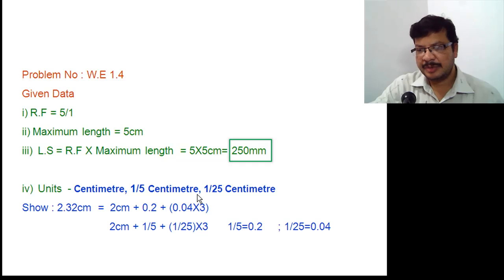With this length, 250 mm, draw a line and that line has to be divided into some number of equal parts. That number can be decided based on the maximum length and the bigger unit among the 3 units. Among these 3 units, the bigger one is cm, and maximum length is 5 cm. So if you divide this 250 mm long line into 5 equal parts and each part is 1 cm, then maximum length 5 cm can be obtained.